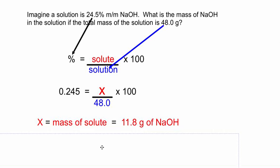And when you solve for x, you realize that it's about 11.8 grams. So there's 11.8 grams of sodium hydroxide dissolved in a total solution whose mass is 48 grams.